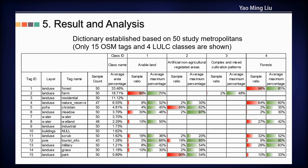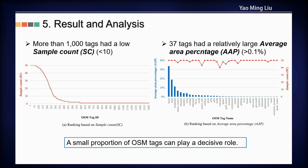This is the dictionary we established — only a part is shown due to space limitations. In the analysis, we found that more than 1,000 OSM tags have a low sample count, and only 37 OSM tags had a relatively large average area percentage. These two findings mean that only a small proportion of OSM tags can play a decisive role in the dictionary.